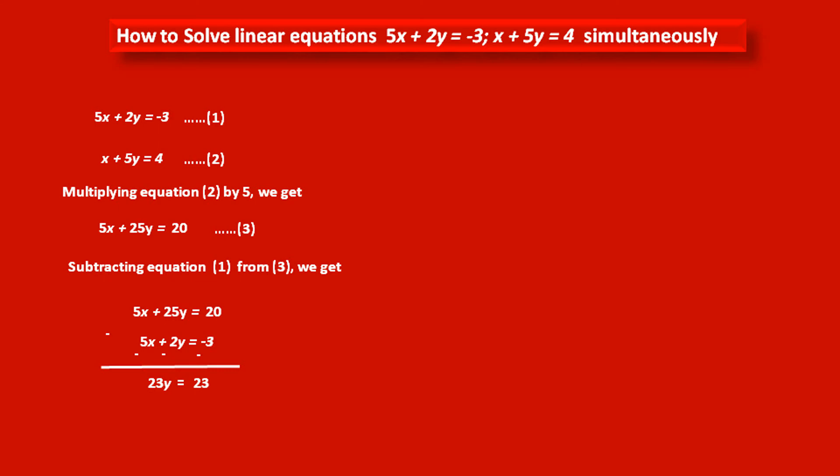Then 25y minus 2y. That is 23y is equal to 20 minus minus 3. So 20 plus 3. So in the right hand side, 23. Dividing both the sides by common factor 23, we get... So this is the value of variable y as 1.